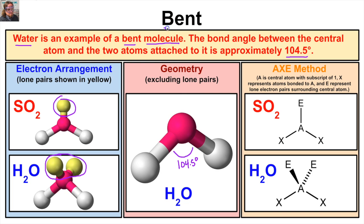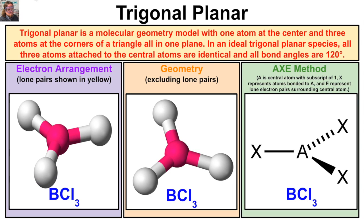With bent molecules we have bond angles of 104.5 degrees. Looking at the AXE method, A is our central atom bonded to typically two of the same atoms, with either one lone electron pair or two lone electron pairs, as in the case of water. If we draw the Lewis structure for water, we can see that. So that is our bent molecular geometry — bond angles of 104.5 degrees, with either one or two lone pairs surrounding the central atom.